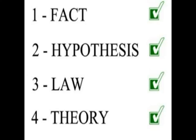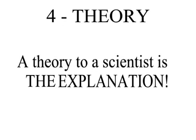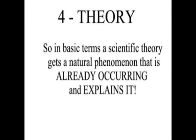Number 4 is theory. To clear things up for theists that do not understand, a scientific theory is the most important thing in science. A theory to a scientist is the explanation — these are the logical constructs of facts, laws, and tested hypotheses that when put together in a logical fashion give us an explanation of the natural phenomenon. In basic terms, a scientific theory takes a natural phenomenon that is already occurring and explains it.